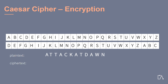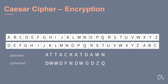Our plaintext starts with an A, which is encrypted by a D. We note this down. Next, the letter T is encrypted by a W, and the next T as well. The next letter is again an A, which is encrypted by D. We proceed analogously for the remaining letters.